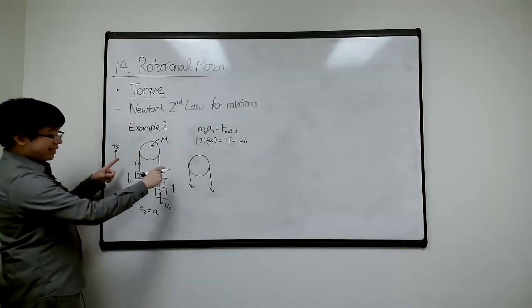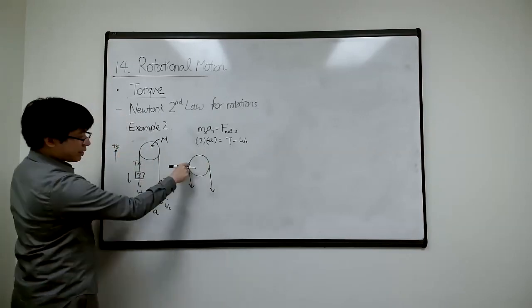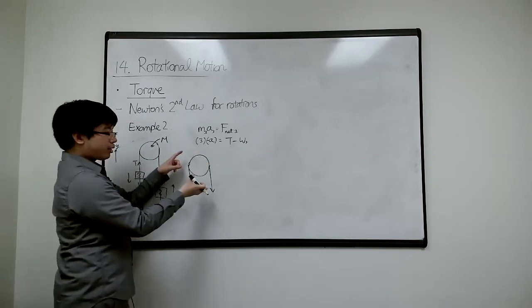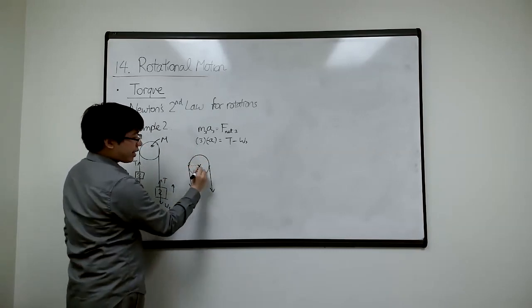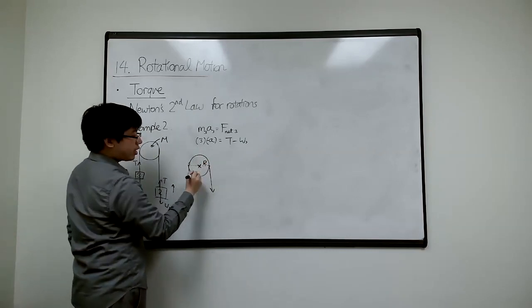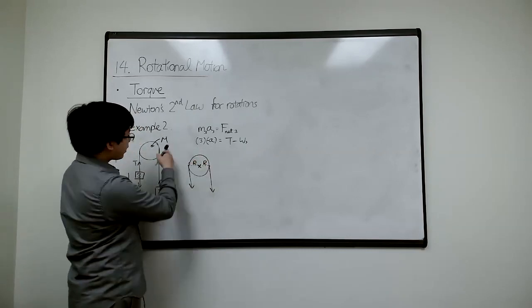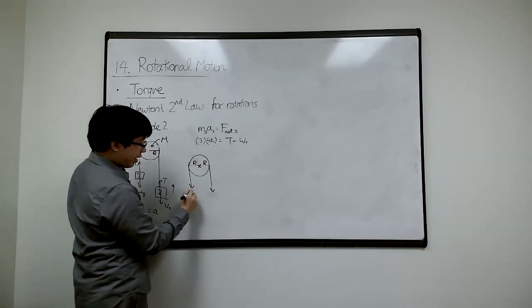So we need to draw the free body diagram for this guy slightly more realistically. We have tension on - there's a rope. This part of the rope is going to pull the pulley, trying to rotate the pulley this way. This is the rotational axis. And let's say it has a radius R, capital R, capital M. Everything here is capital for the pulley.